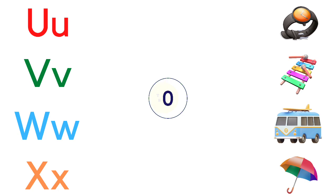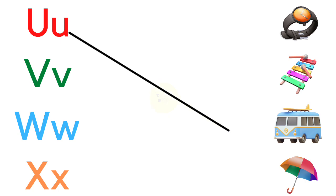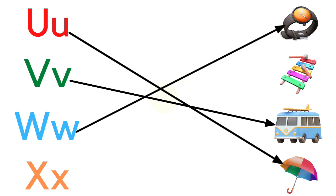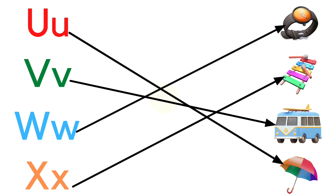U for Umbrella, V for Van, W for Watch, X for Xylophone.